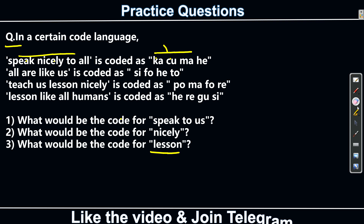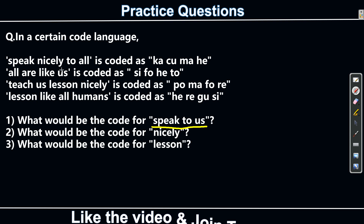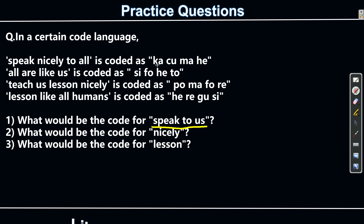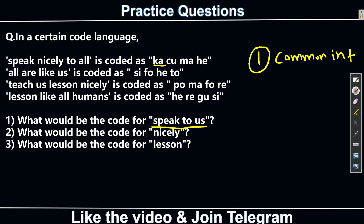So we need to find those codes systematically. The first step is to find your target statement. We need to find the code for 'speak to us', so the target statement is the one containing speak, to, and us. Now we eliminate code words one by one. Start with ka — ka is only present in the first statement, so ignore it for now.